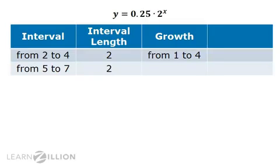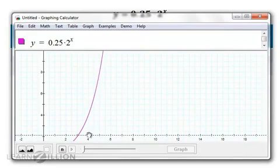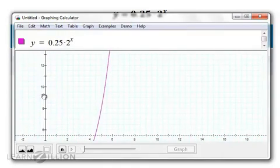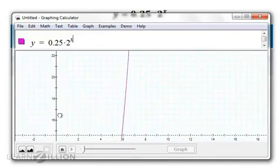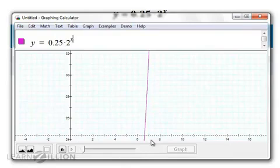Let's look at the interval that goes from 5 to 7. When x equals 5, y equals 8. And when x equals 7, y equals 32.